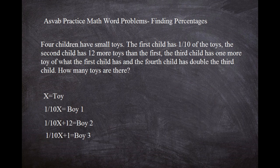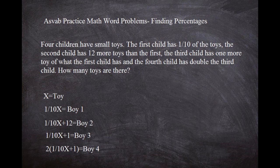The fourth child has double the third child. The third child has one tenth X plus one, so boy four has two times (one tenth X plus one). Now we have all four boys. To find X — the total — we add boy one plus boy two plus boy three plus boy four, and that should equal X, because X is the total amount of toys.